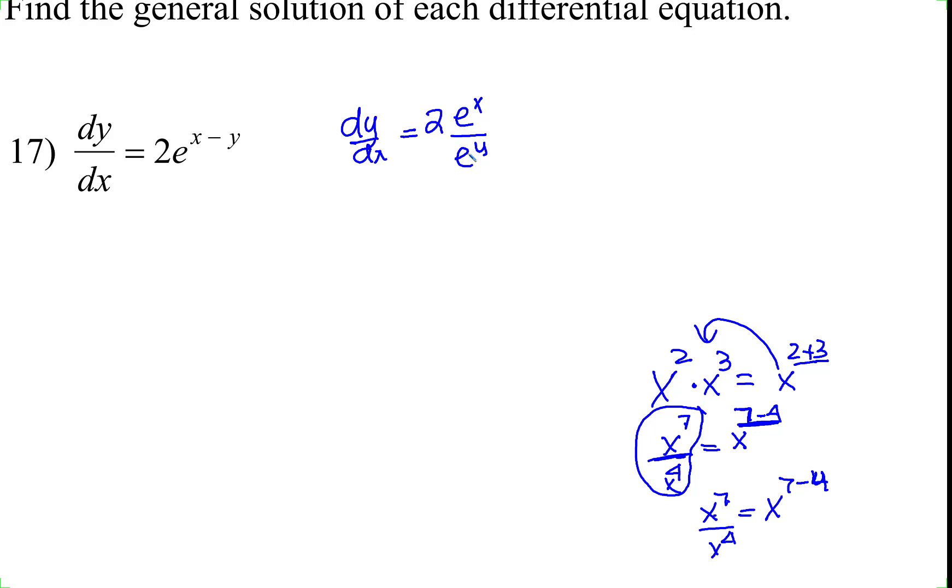Now, this essentially looks like cross-multiplying, but that's not really what's happening. You're multiplying e^y on both sides - that cancels here - and then you're multiplying dx on both sides.